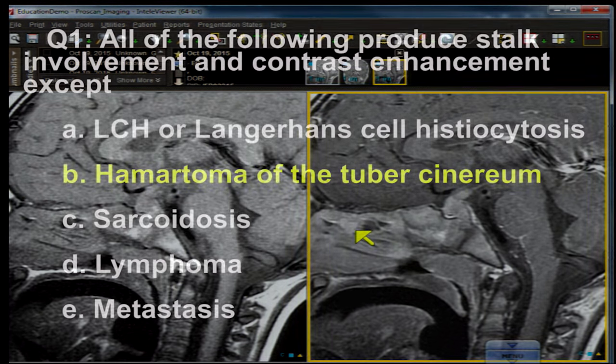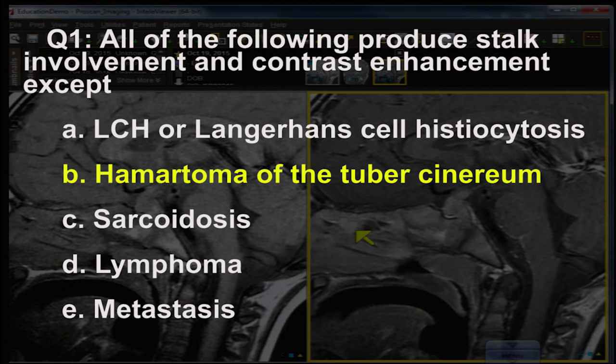Question number one: all the following produce stalk involvement and contrast enhancement except — and the exception is hamartoma of the tuber cinereum, associated with behavioral disturbance and gelastic seizures. Hamartomas have little to no enhancement.